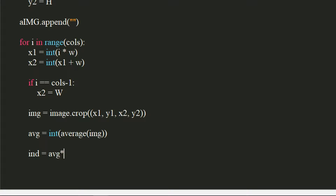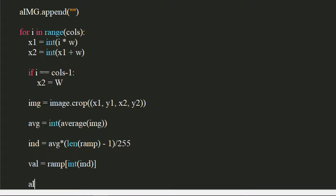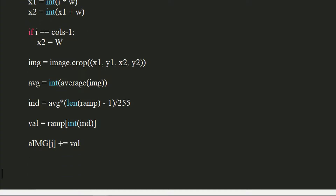It would be the average brightness multiplied by the length of the character ramp minus 1. We will also divide it by 255 to normalize the value. Let's get the required character from the ramp. Concatenate this character to the string that we appended to the array earlier. Lastly, return the array of rows of our ASCII art.